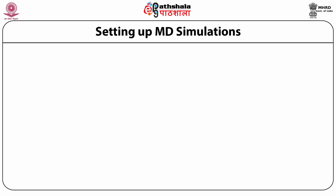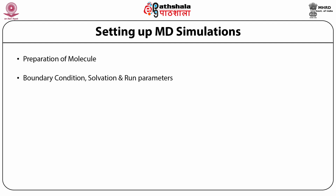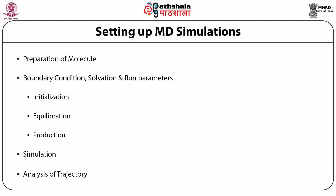Before starting an MD simulation run, the molecules to be simulated must be prepared appropriately. Boundary conditions, solvation model, and run parameters should be set accordingly. MD simulations have mainly three stages: initialization, equilibration, and production. In initialization, we assign velocities and start the movement of molecules. In equilibration, we equilibrate the system and negate the effect of the initial randomly assigned velocities. Finally, the production run provides the trajectory which is used for analysis of MD results.